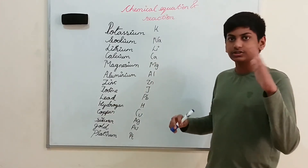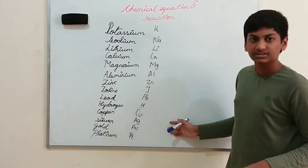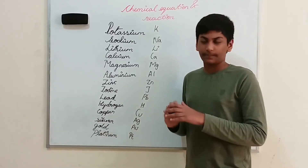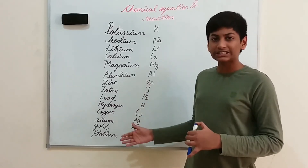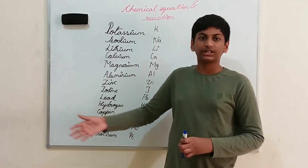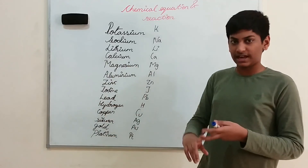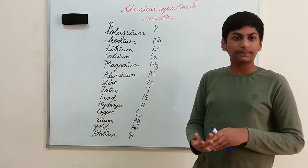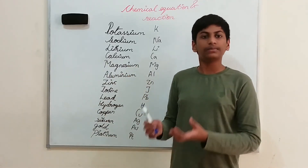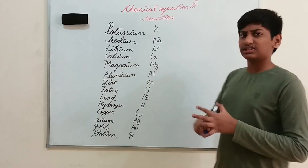Potassium is at the top and platinum is at the bottom. After learning this, you can go to my next part and understand it clearly. My next part will be full of reactivity series, precipitate, and how to understand the numbers in equations, etc. So let's learn this reactivity series.